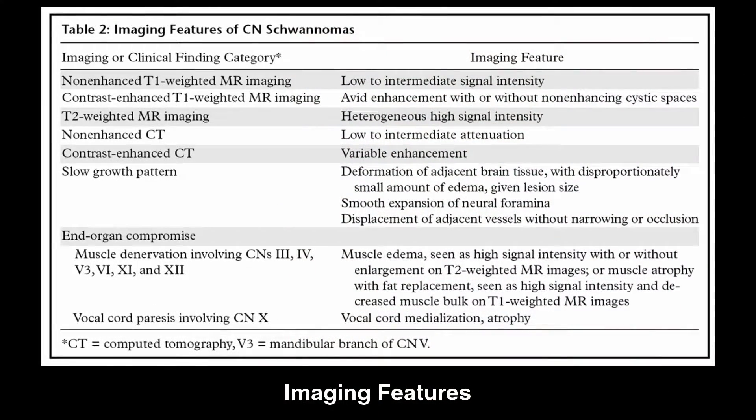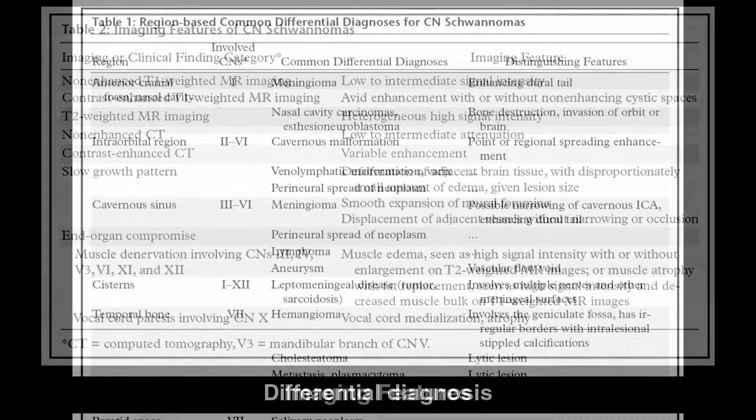Most schwannomas have a characteristic MR appearance on T2-weighted imaging with heterogeneous hyperintensity, relating to the ratio of compact Antoni A cells to loosely arranged Antoni B cells, with avid post-contrast enhancement typically seen.